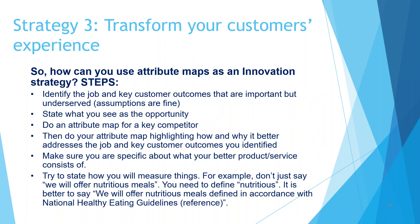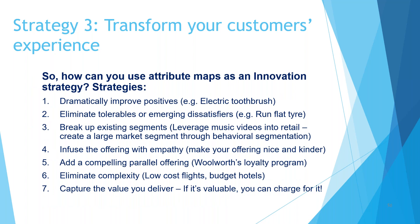The steps for that: identify the job and key customer outcomes that are important but underserved, state what you see as the opportunity, do the attribute map — essentially that table — for a key competitor, do your own map, compare them, and be as specific as possible in stating those attributes. For example, for nutritious meals, define that specifically — such as offering nutritious meals defined in accordance with national healthy eating guidelines. That process will help you identify opportunities to modify your product to get better traction with your customers, or to introduce innovation into the product or service offering to improve your business.